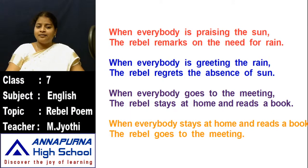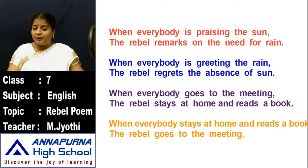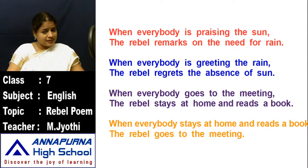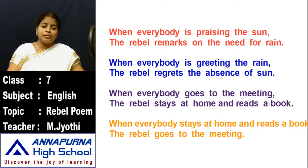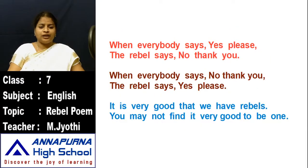When everybody is praising the sun, the rebel remarks on the need for rain. When everybody is greeting the rain, the rebel regrets the absence of sun. When everybody goes to the meeting, the rebel stays at home and reads a book. When everybody stays at home and reads a book, the rebel goes to the meeting.